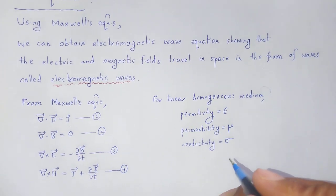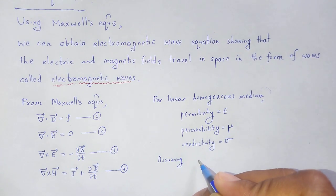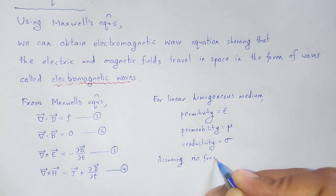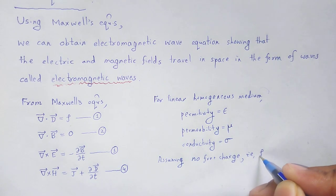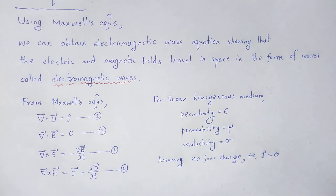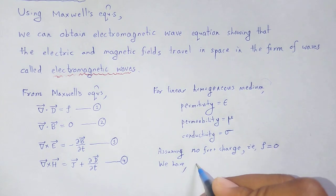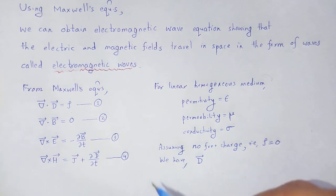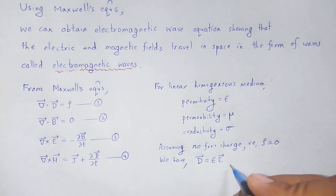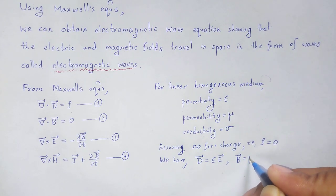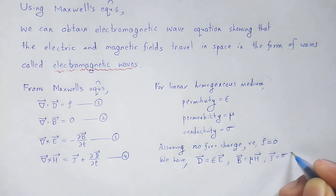No free charge. Assuming no free charges means charge density rho is equal to 0 — no source of charge. We have the dielectric displacement vector D is equal to epsilon times E vector, and B vector is equal to mu times H vector, and current density J is equal to sigma times E vector.